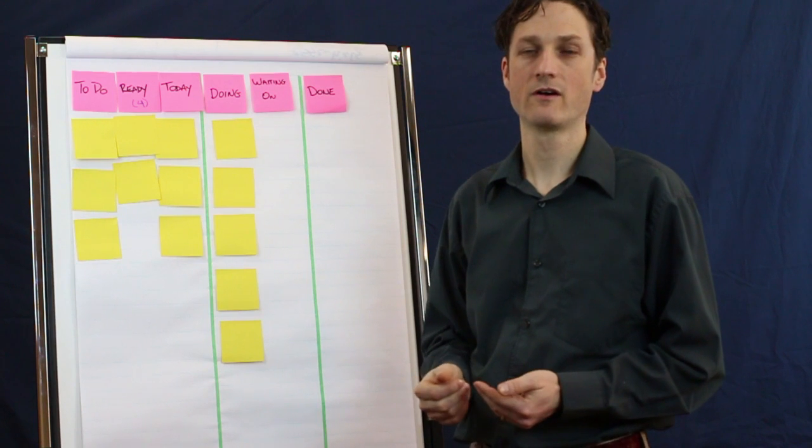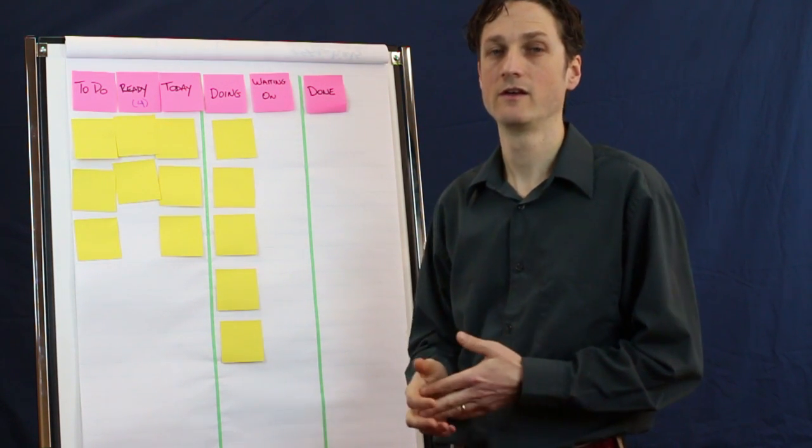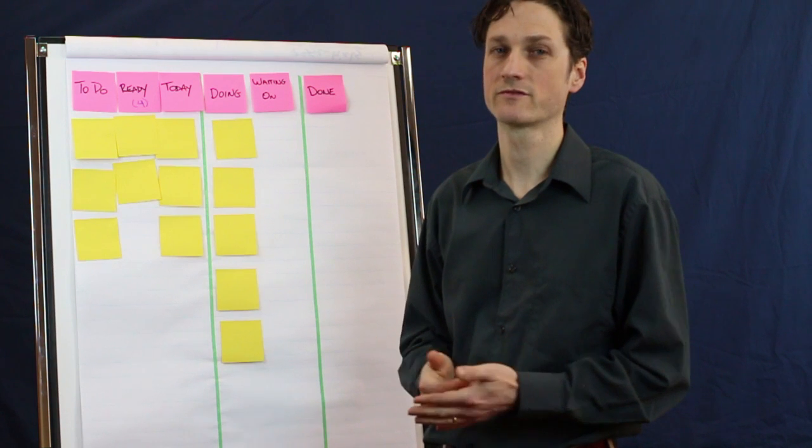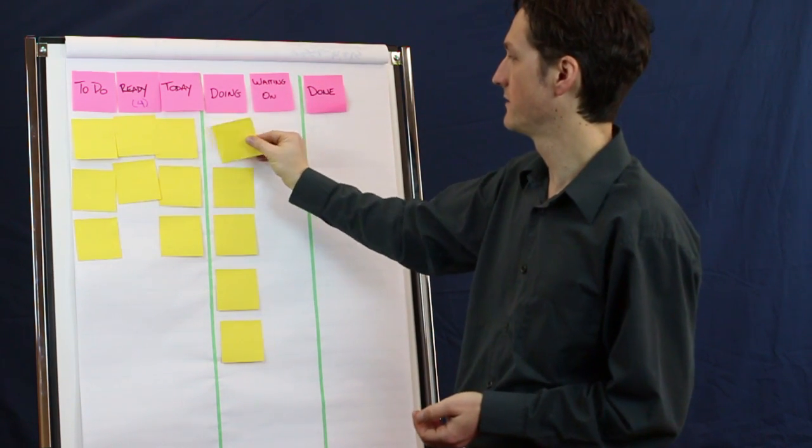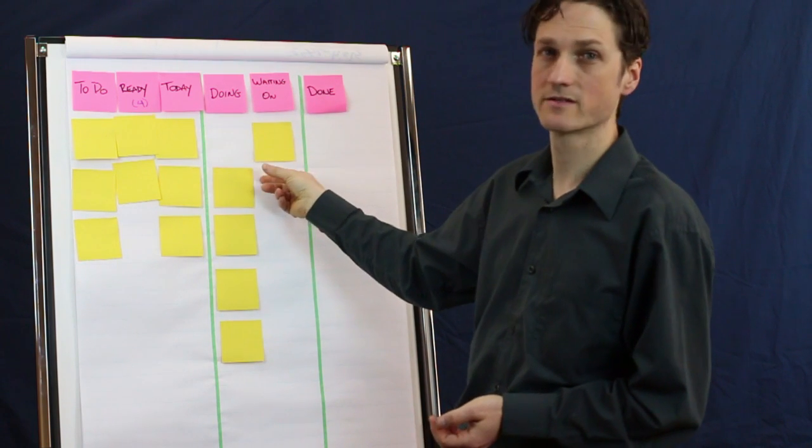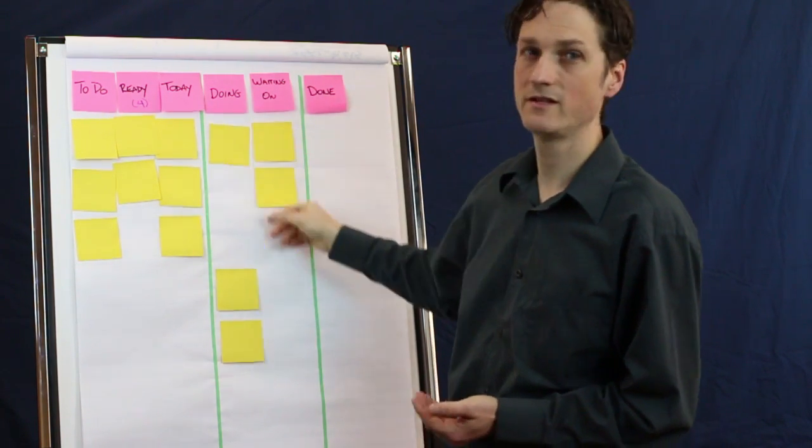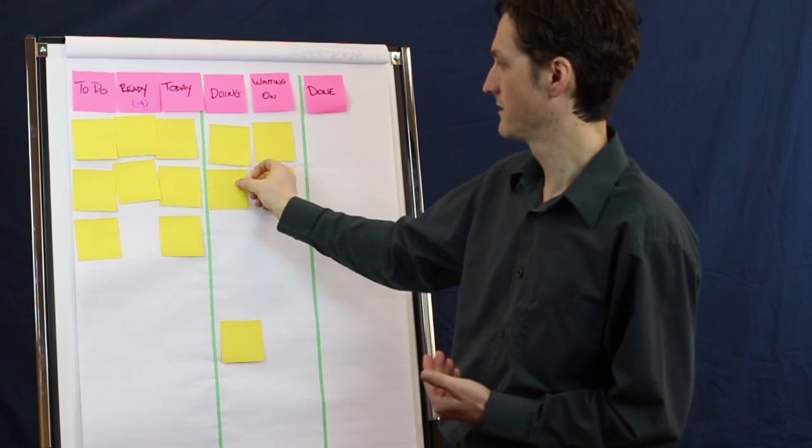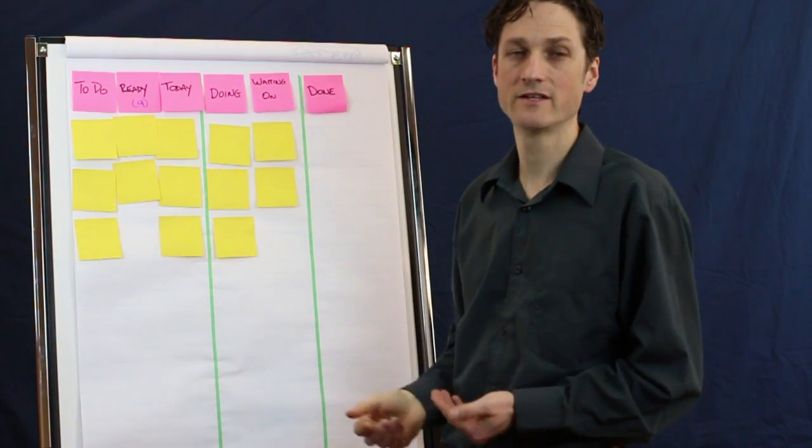By adding another column called Waiting On, or sometimes known as the Pen, whatever name works for you is the best name, of course, we can break this up and see what's in the state where I can act on and what are the state where I just have to pay attention to those things.